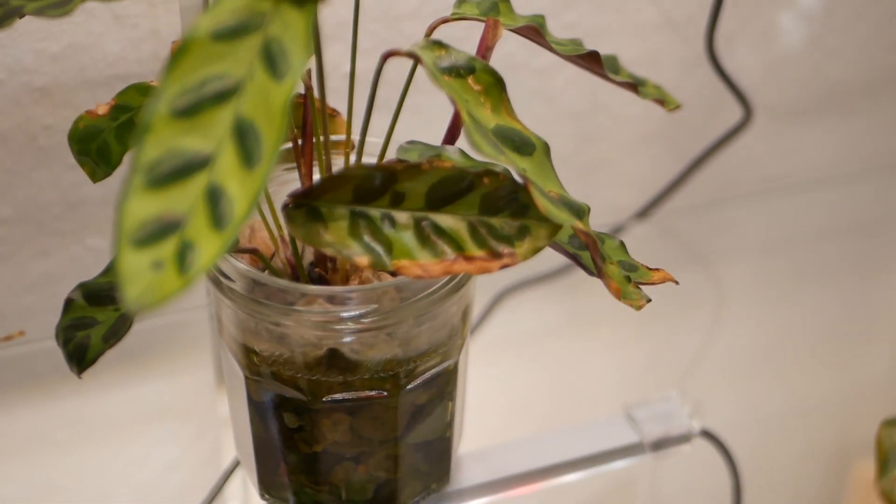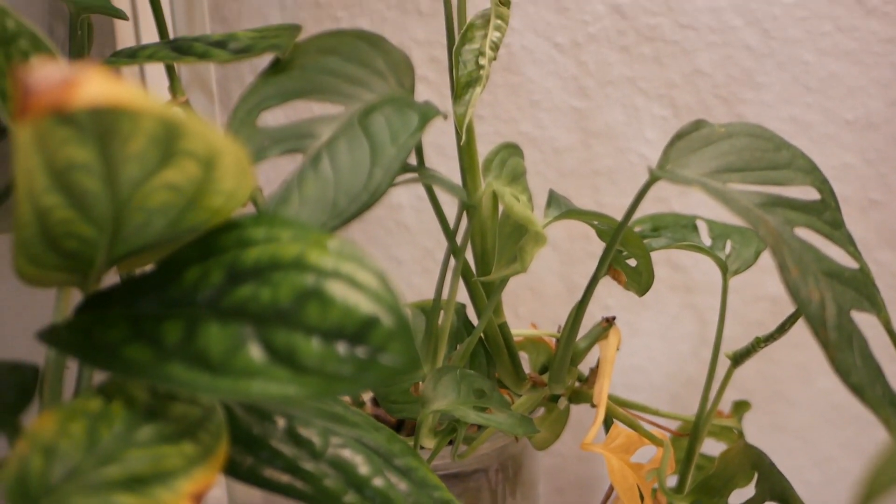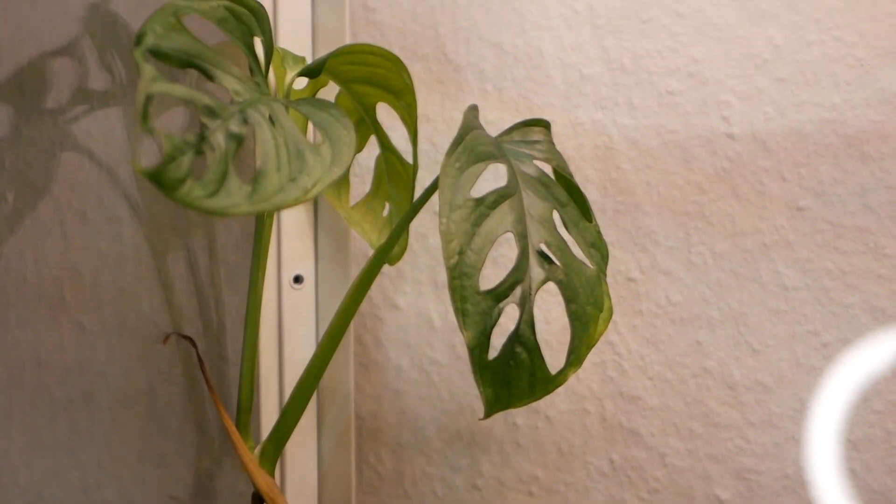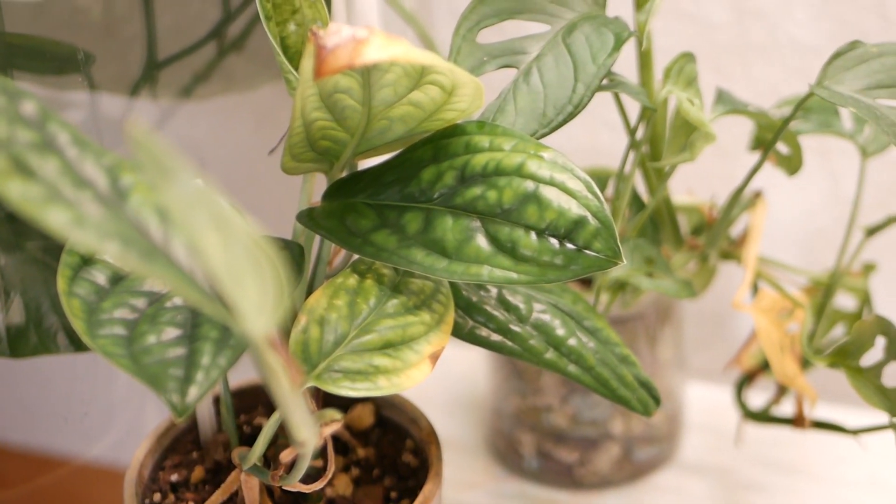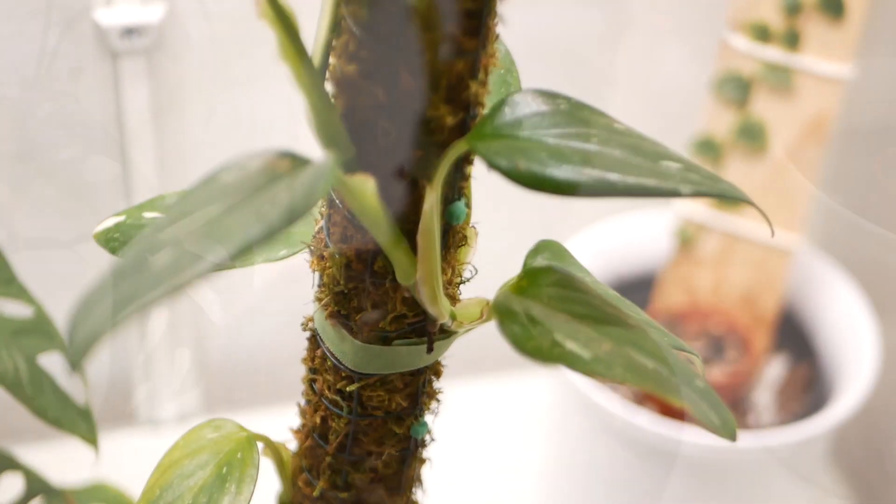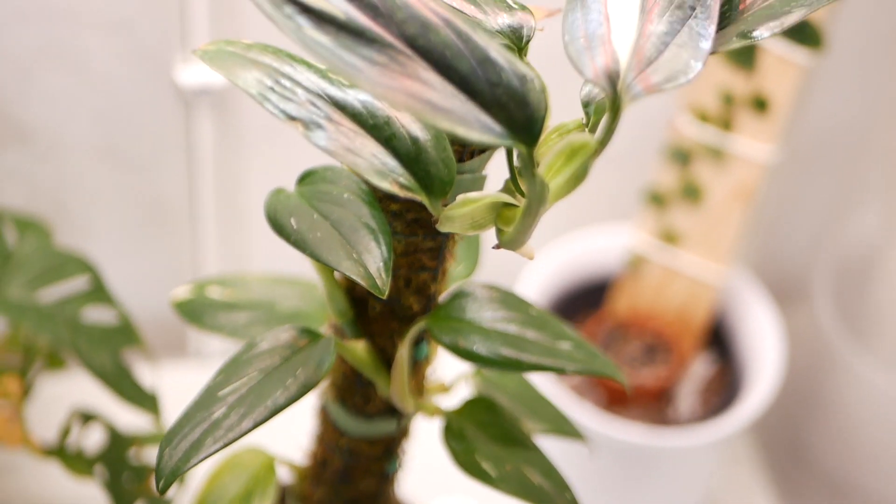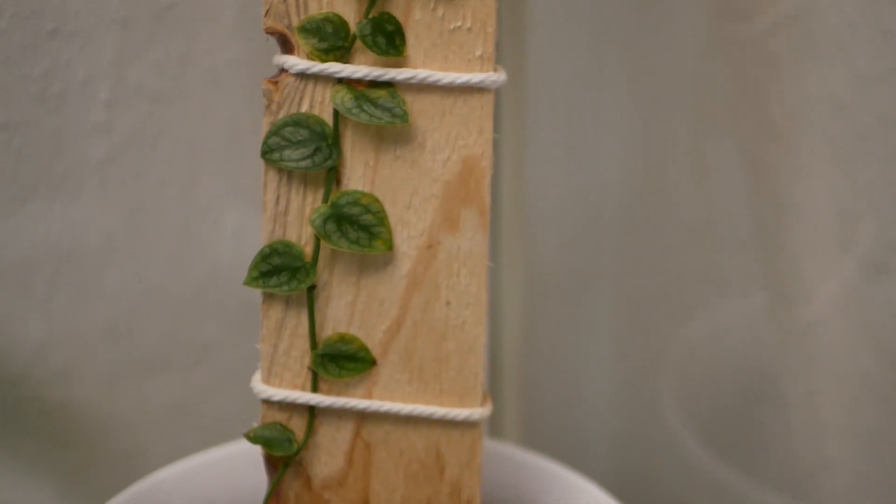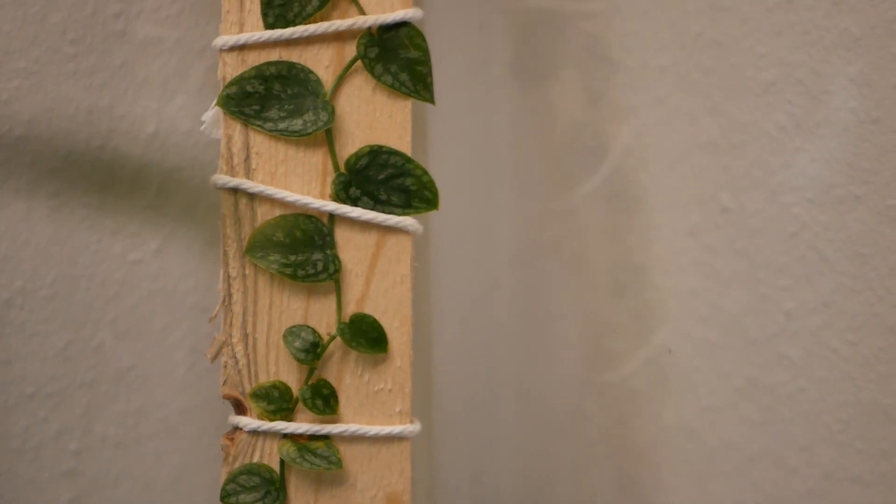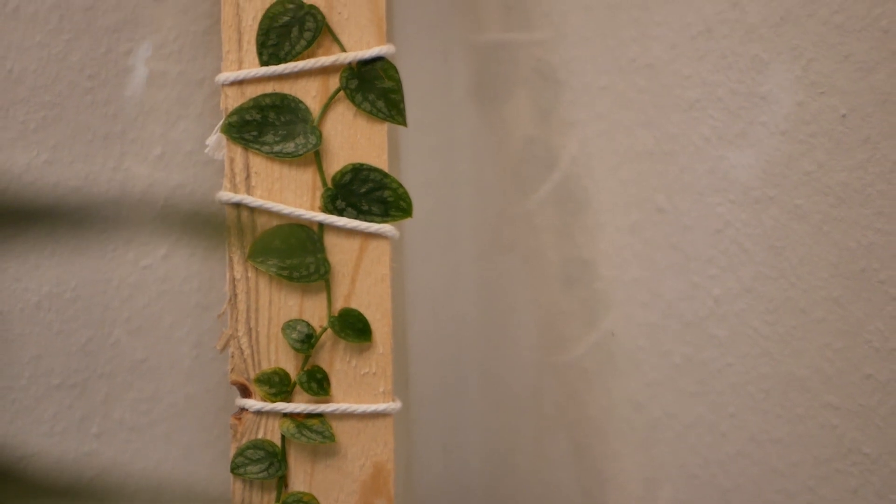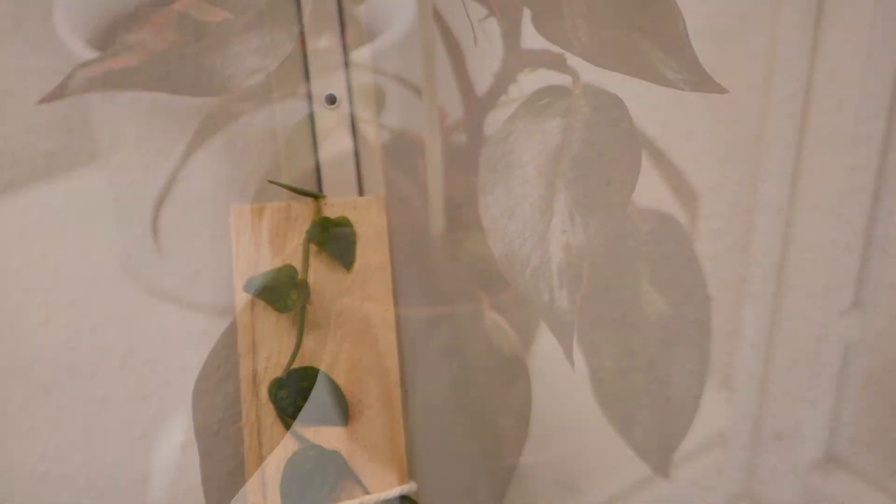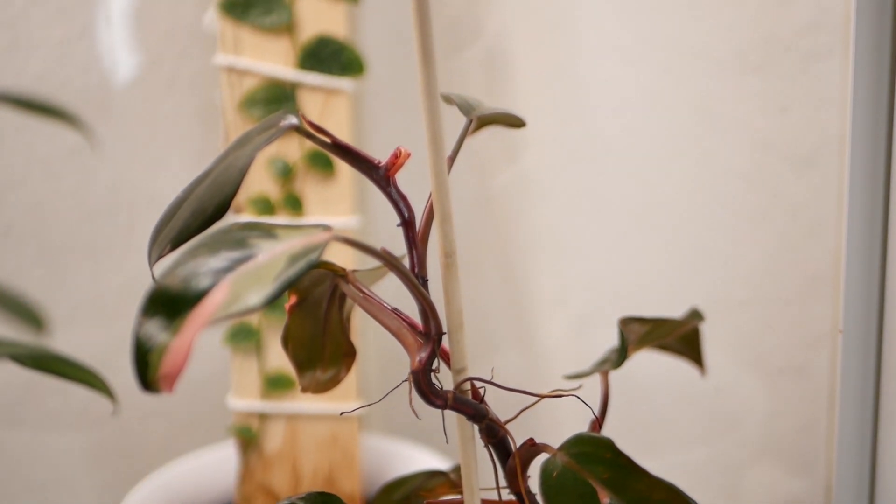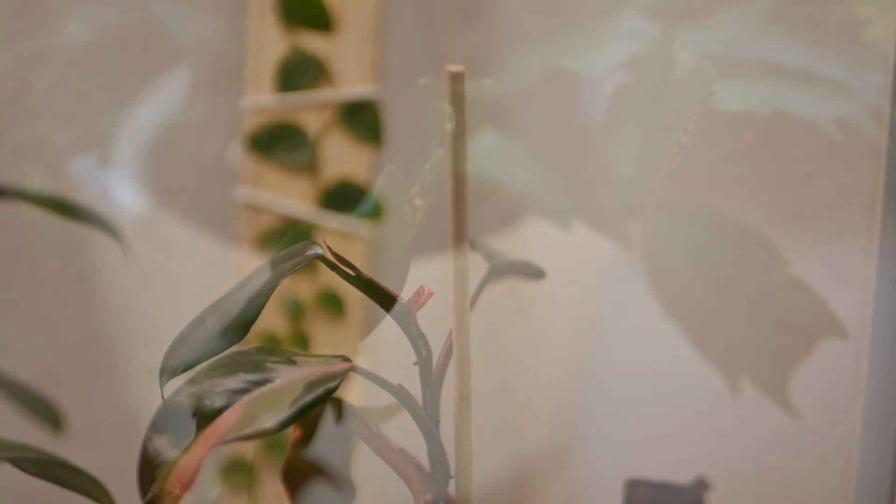On the bottom shelf there is my monstera adinsonia, my monstera peru, my monstera stendliana. In the back there is my monstera dubia, and here you can see my philodendron pink princess.